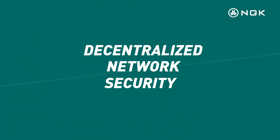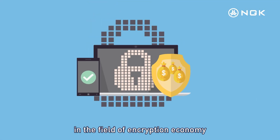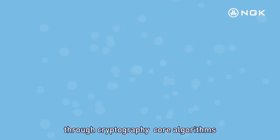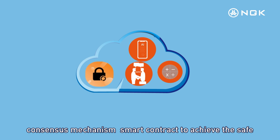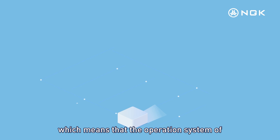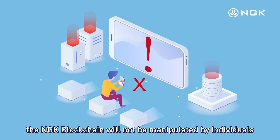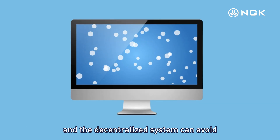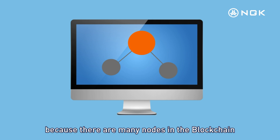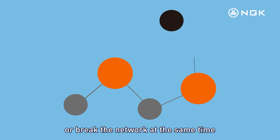Decentralized Network Security. NGK has achieved favorable results in the field of encryption economy. The blockchain adopts a decentralized structure designed through cryptography, core algorithms, consensus mechanism, and smart contracts to achieve the safe operation of the main network. This means the NGK blockchain will not be manipulated by individuals, and the decentralized system can avoid the impact caused by the failure of a single node, because many nodes in the blockchain are unlikely to power off or break the network at the same time.